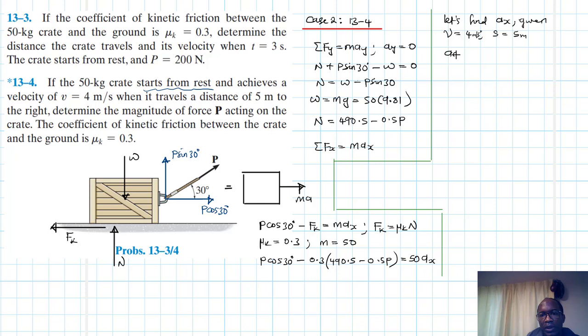So we are going to use this particular derived equation V dV = A dS. This comes from V = dS/dT, remember? And A = dV/dT where we make the dt substitute formula then we come up with that particular equation.